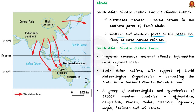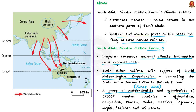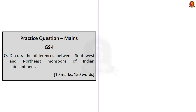The South Asian Climate Outlook Forum prepares consensus seasonal climate information on a regional scale, providing a consistent basis for preparing national level outlooks. The South Asian nations, supported by the World Meteorological Organization (WMO), have been conducting this forum since 2010. It is a grouping of meteorologists and hydrologists from member countries, which include Afghanistan, Bangladesh, Bhutan, India, Maldives, Myanmar, Nepal, Pakistan, and Sri Lanka — nine nations in total. This discussion covered northeast monsoon formation and the South Asian Climate Outlook Forum.